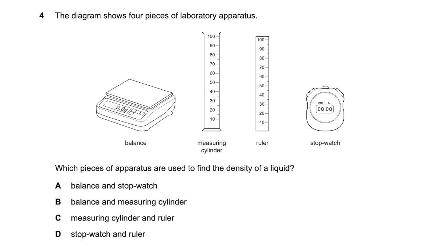The diagram shows four pieces of laboratory apparatus: a balance (measures mass), measuring cylinder (measures volume), ruler (measures length), and stopwatch (measures time). Which pieces are used to find the density of a liquid? Density = mass ÷ volume, so we need the balance and measuring cylinder. Option B is correct. Note: if the object is a perfect cuboid, we could use a ruler, but that combination isn't an option here.